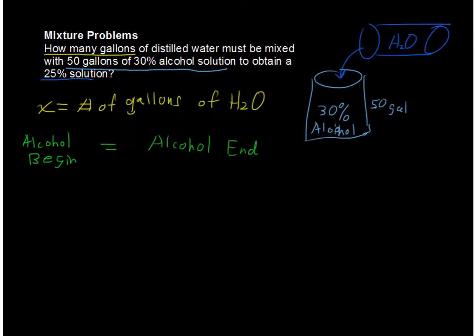Well, how much alcohol is that? Well, I alluded to that just a second ago, and that is in the beginning we have 30 percent, 0.3 times 50. 30 percent of the 50 gallons is the pure alcohol, so that's what we have here, and that equals the amount at the end.